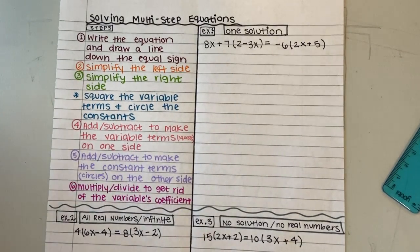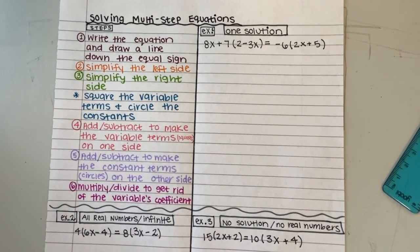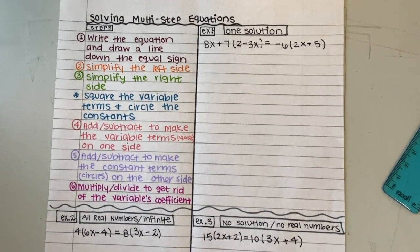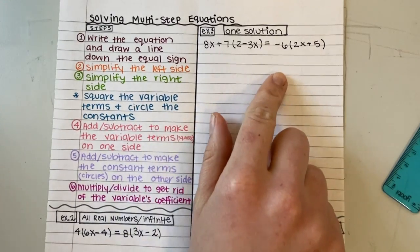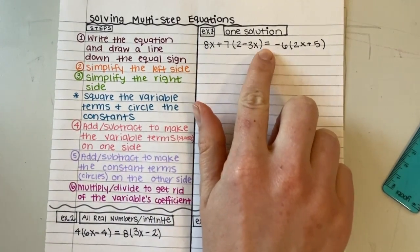Now that we remember how to do one and two step equations and we've looked at simplifying expressions, we should pretty easily be able to follow these steps and solve multi-step equations that have the same variable on both sides of the equal sign.